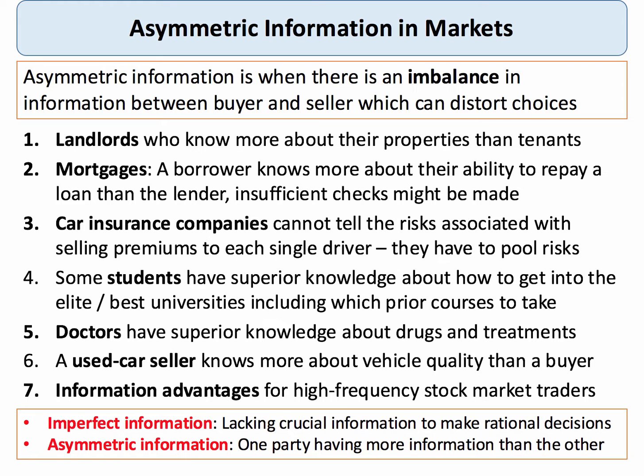Good examples include landlords who know more about the condition of their properties than perhaps student tenants. A mortgage borrower who knows more about their ability to repay a housing loan than the lender. Car insurance companies can't tell the risks associated with selling insurance premiums to individual drivers. Some students seem to have better knowledge than others about how to get into the best courses and which degree courses are the best to take.